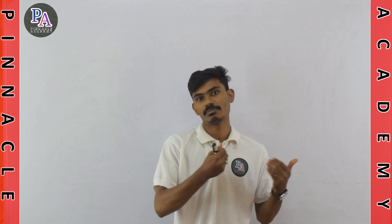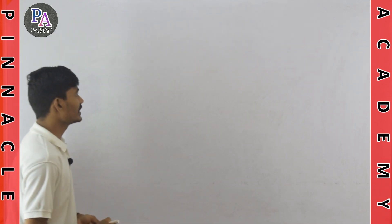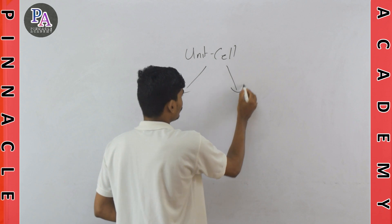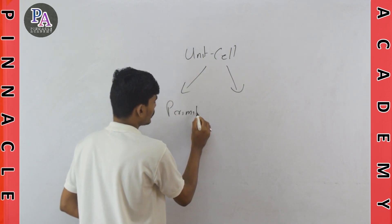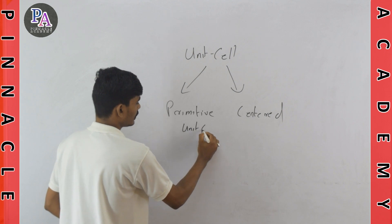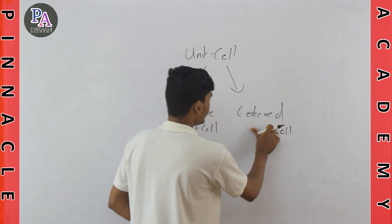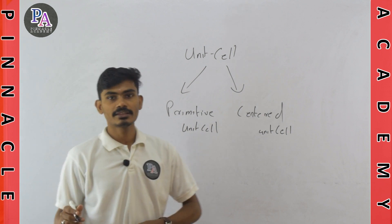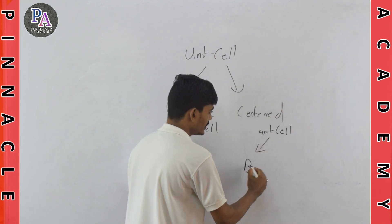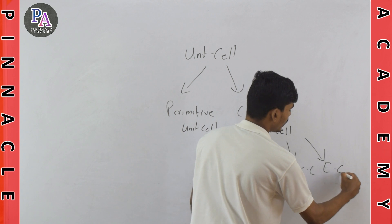We have the characteristics of the unit cell. We have the classification of the unit cell. The first type is primitive and the second one is end-centered. We also have BCC, FCC, and ECC.